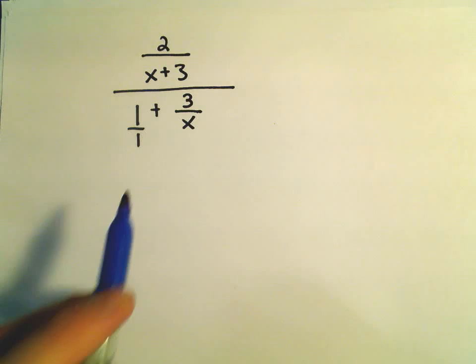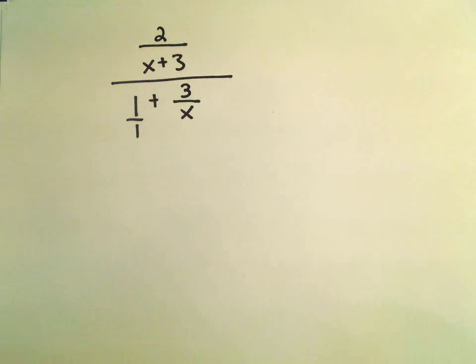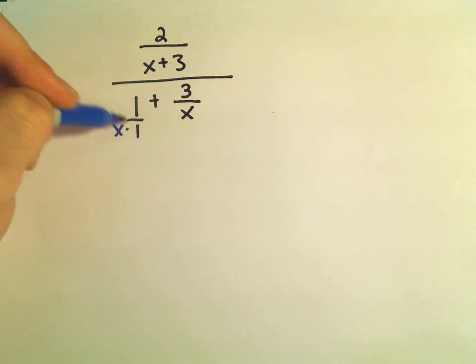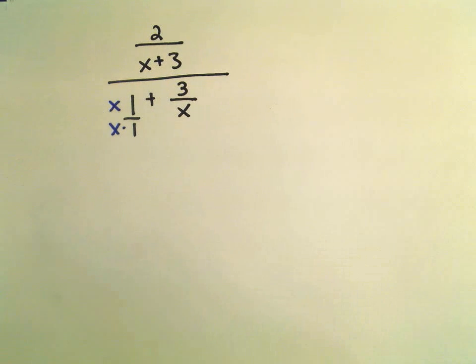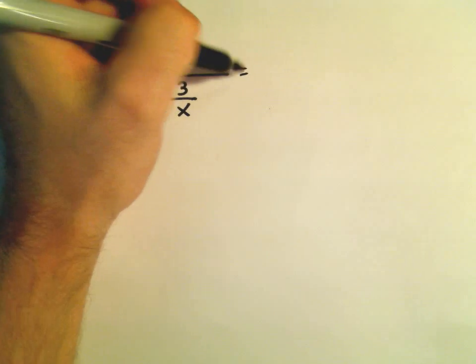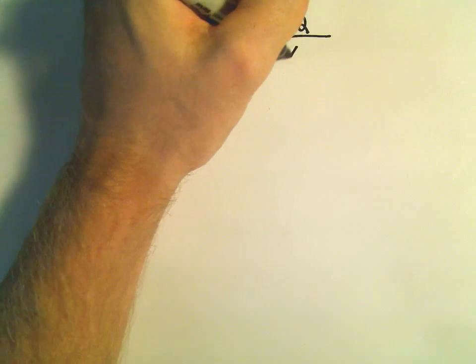So in this case, I look at the denominators. We have 1 and x. So to get a common denominator, I could multiply the first term by x over x. And in the numerator, we'll simply leave that alone, 2 over x plus 3.